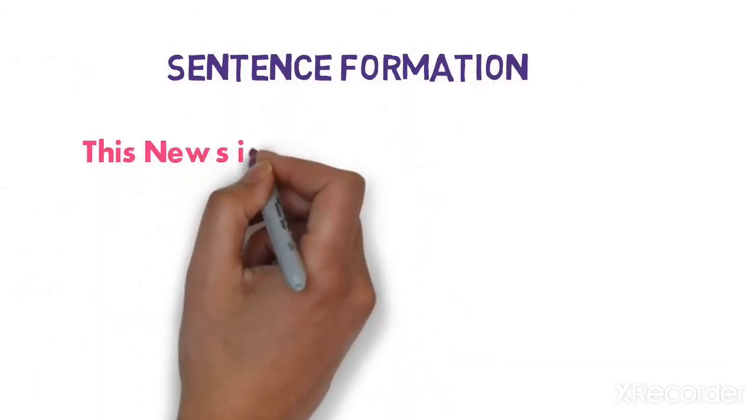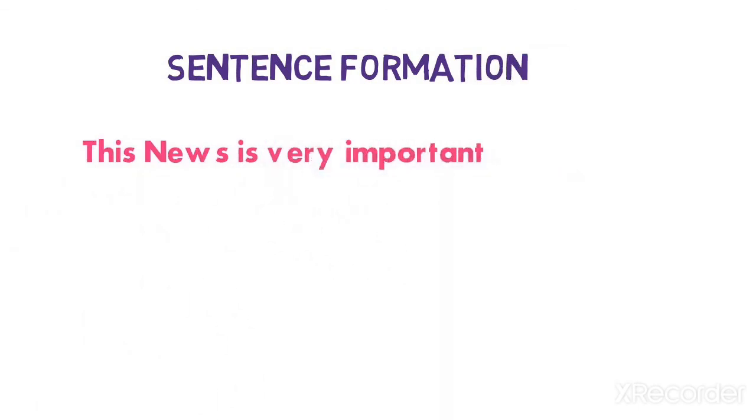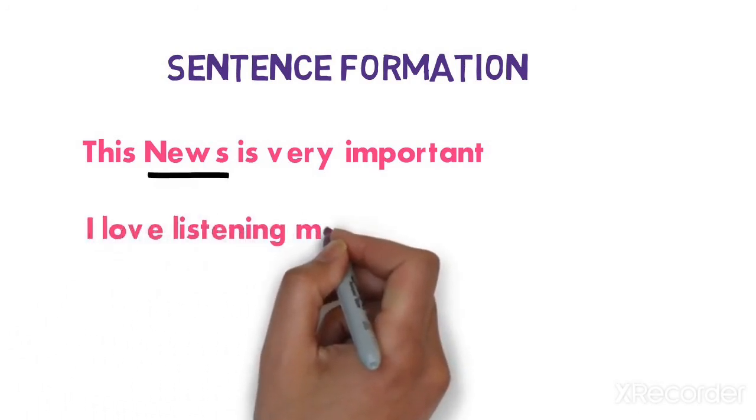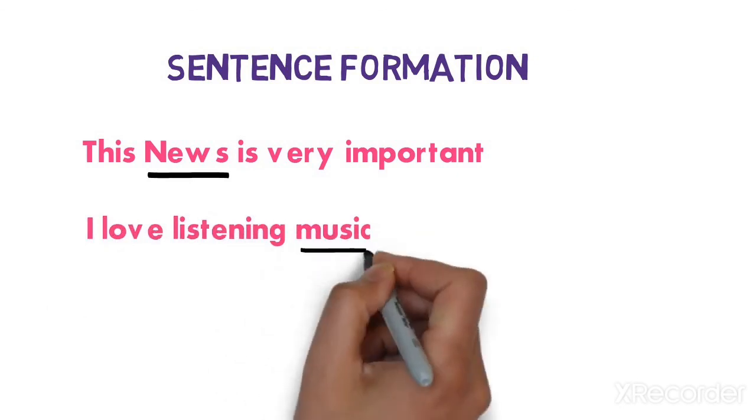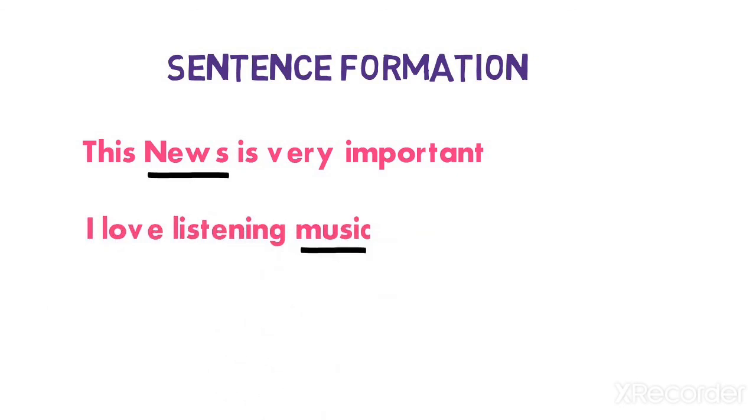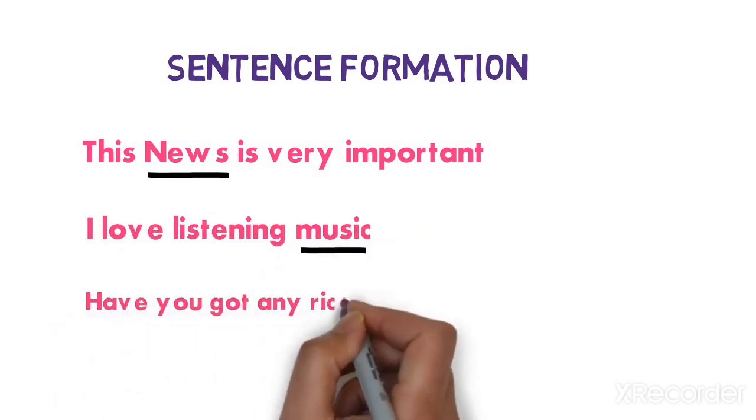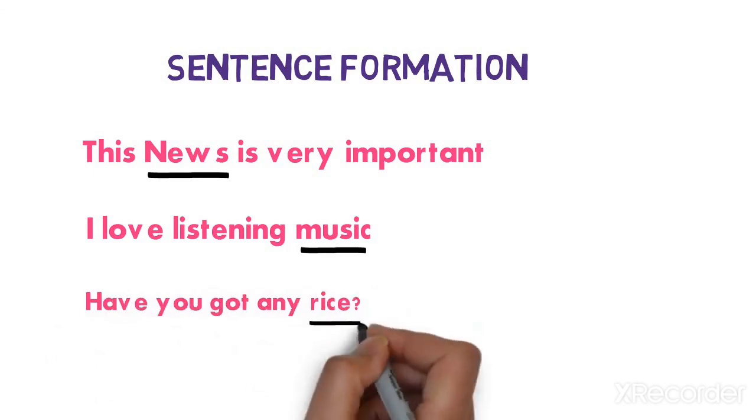Now let's see some sentence examples for the same. This news is very important. Here news is uncountable. You cannot count how many news are there. I love listening to music. Here music is uncountable nouns. Have you got any rice? Here rice is uncountable nouns. Hope you are clear with the category of uncountable nouns.